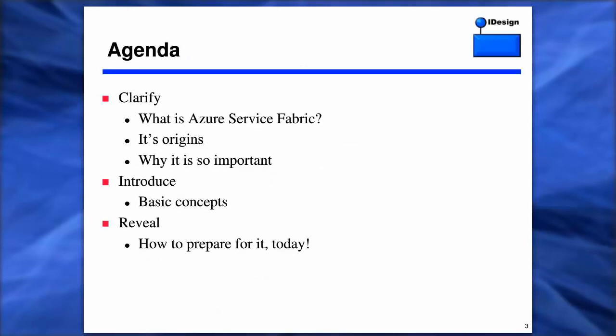Today, I'm going to clarify for you the value proposition of the fabric. We're going to talk briefly about what the fabric is, and then explore its origins, because its origins are very relevant to what you're all experiencing right now trying to build modern software systems. Then we'll dive more deeply into why this particular technology is so important, touch on basic concepts, give you some foundational introduction to the way the fabric works, and finally introduce how you can actually prepare for it today.